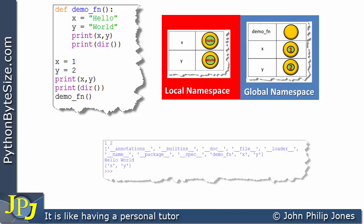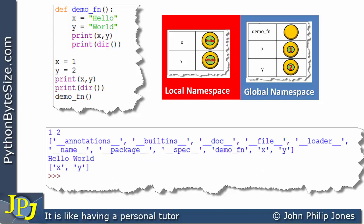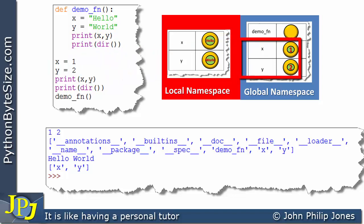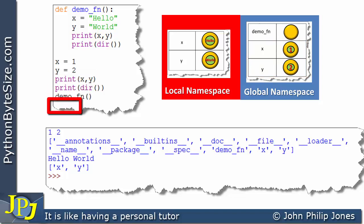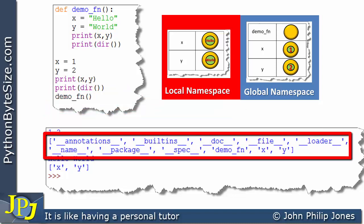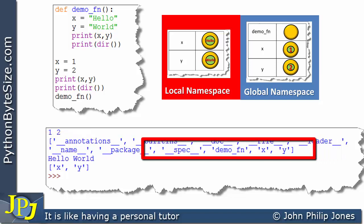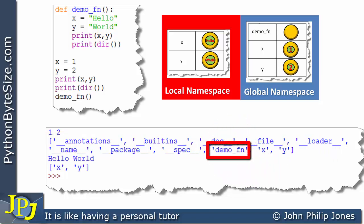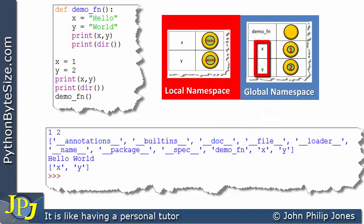Let's now consider the runtime for this computer program and single-step through the code. The first two lines bind x and y to the appropriate integer objects, which we can see in the global namespace. The next line prints what's in the global namespace, printing 1 and 2. Then this line prints the global namespace itself — spanning two lines — and the entries I'm interested in are the function name, x, and y, which all appear in the global namespace.